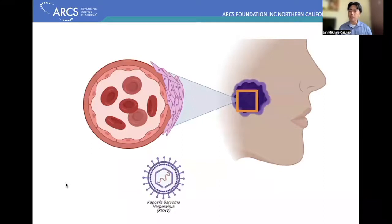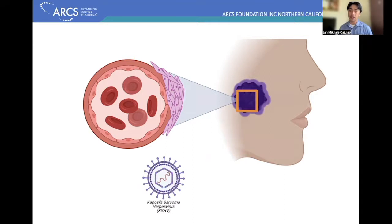But what is Kaposi's sarcoma or Kaposi's sarcoma herpes virus? During the late 90s, during the AIDS epidemic, this virus was discovered when scientists sequenced tumors of patients with Kaposi's sarcoma and found a herpes virus-like sequence. Kaposi's sarcoma is a cancer of the endothelial cells caused by this virus and shows up as purple or red lesions on the surface of one's skin.